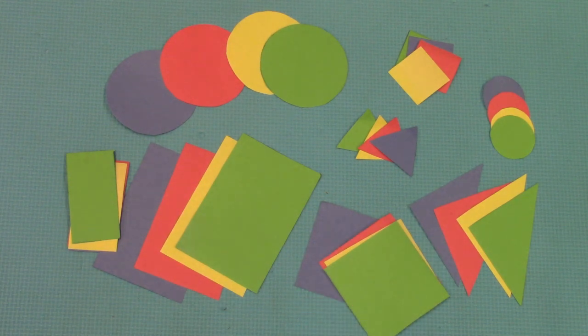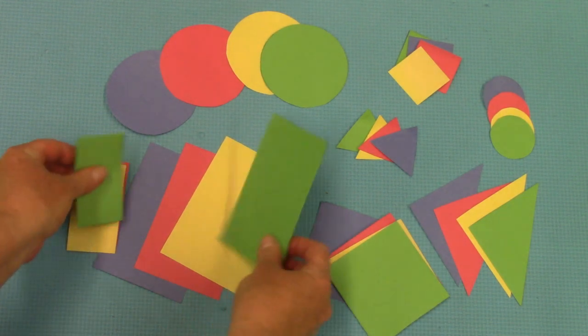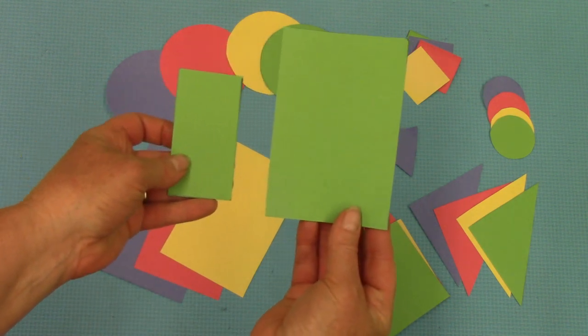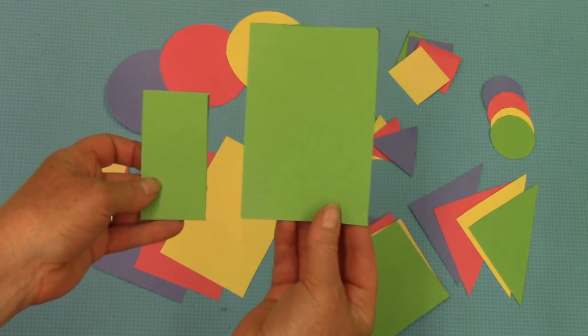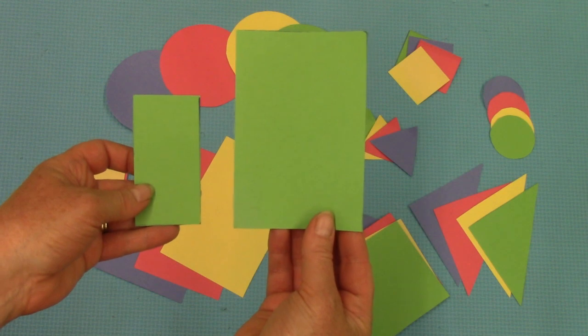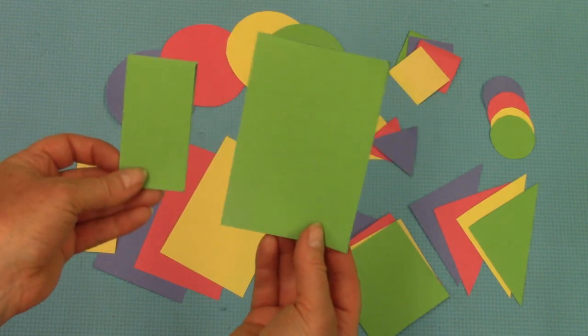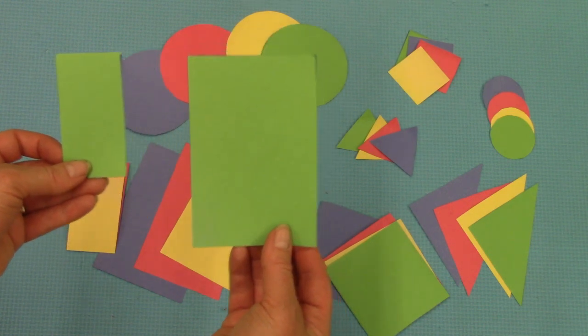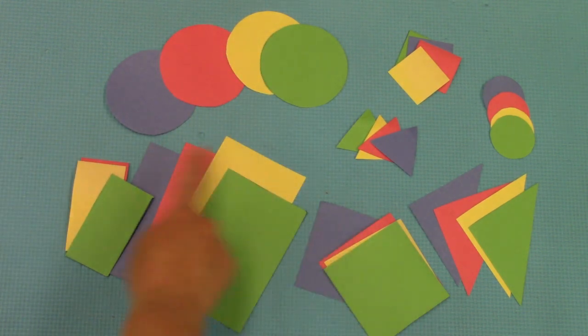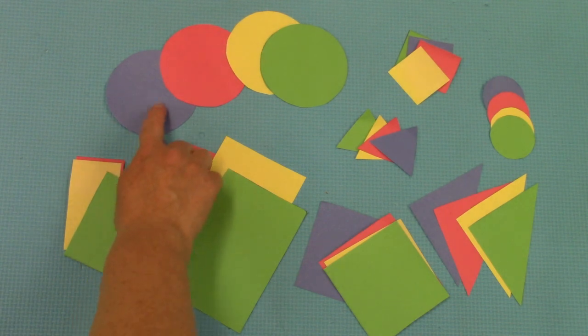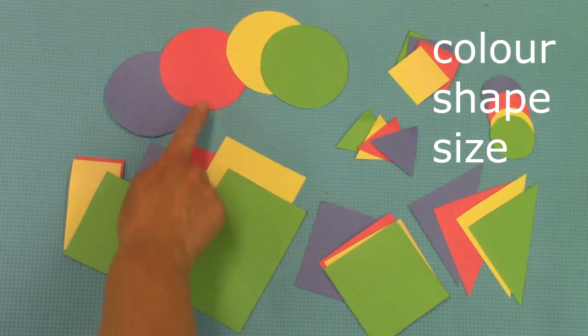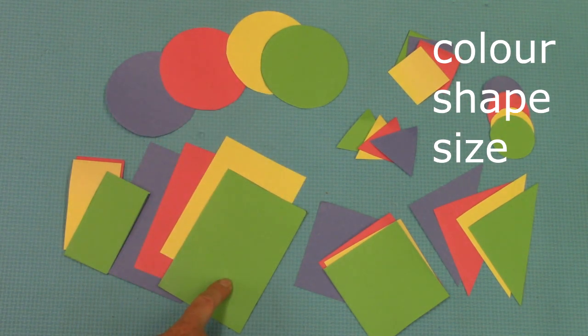But I would like for you to look at these two green rectangles. Are they the same? They're not. What's different about them? You're right. Their size. So on our shapes we have different colors, different shapes, and different sizes.